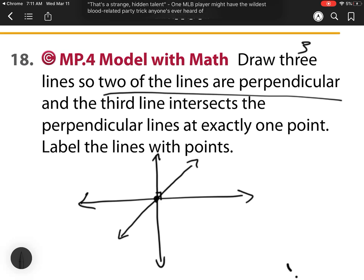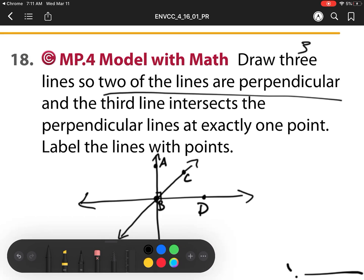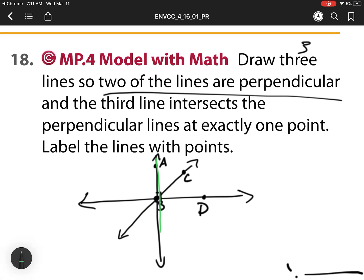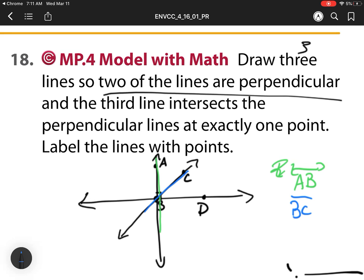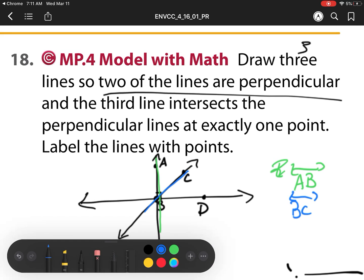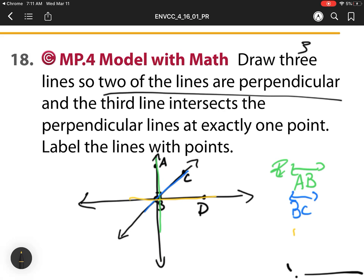So now let's label them because it says label our lines. So we have labeled the lines with the points. So we're going to just say this is A. We'll say that intersection is B, C. And let's just label this part over here D. So now we've actually labeled all of our lines. So we have this is line AB. And then here we have line BC. And our last one we see is line DB or BD, since they're the same.